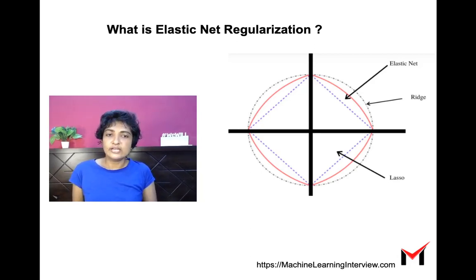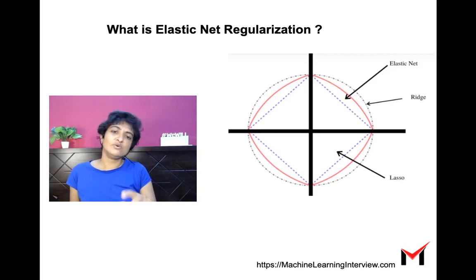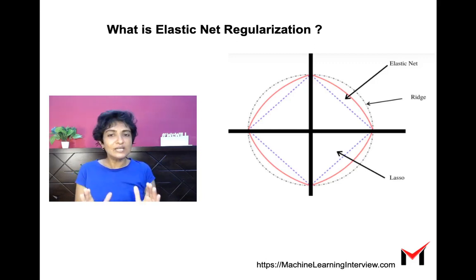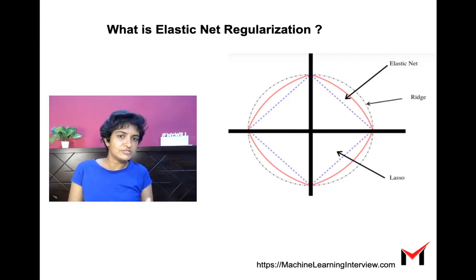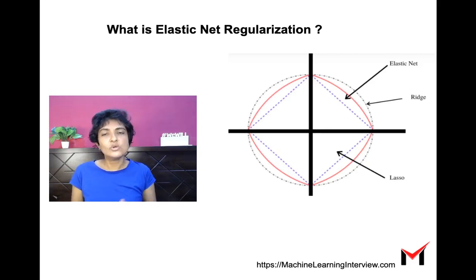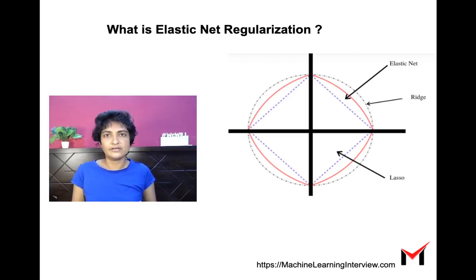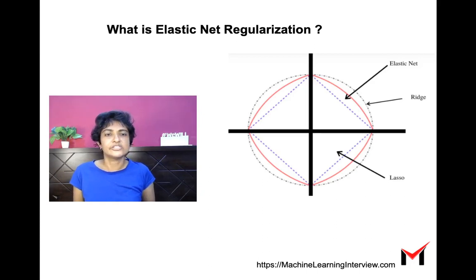As we know, lasso induces sparsity. For elastic net, the contour is somewhere in between these two — it looks a little like the diamond-shaped lasso contour, but each segment itself is curved. So it does induce sparsity, but not as much as lasso, and it does help shrink the weights like both ridge and lasso do.